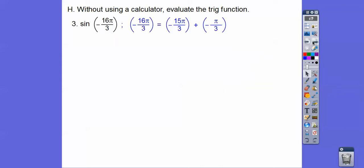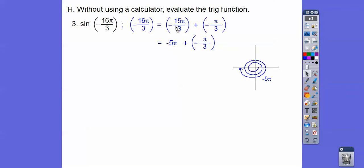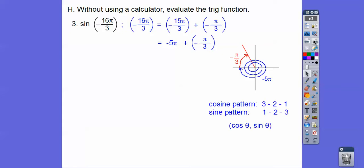Negative 16 pi over 3 — there are a couple of ways to do this. You can take out full circles: negative 12 pi over 3 plus negative 4 pi over 3. This simplifies to negative 5 pi, then continuing with negative pi over 3. The cosine-sine pattern — cosine goes 3, 2, 1 and sine goes 1, 2, 3 — gives us sine equal to positive root 3 over 2 here because of the quadrant.